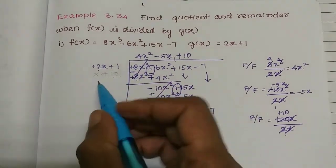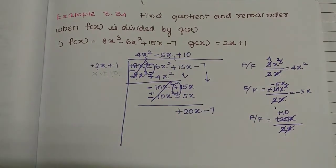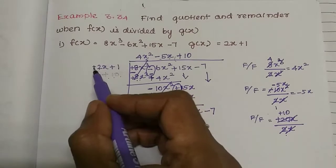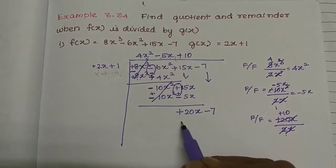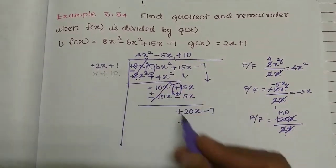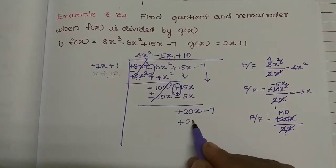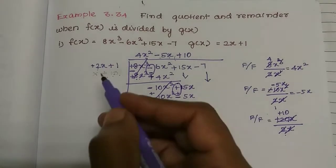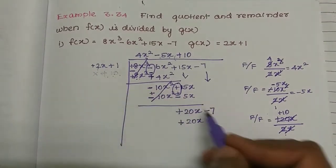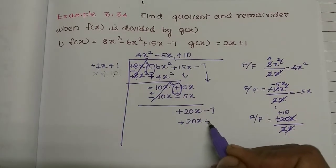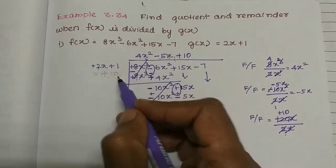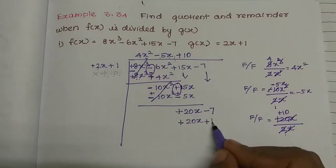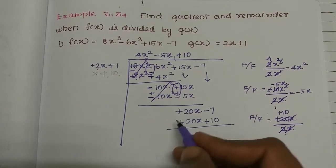We multiply plus 10 by the divisor 2x plus 1. Plus into plus is plus; 2 into 10 is 20, into x gives 20x. Then plus into plus is plus; 1 into 10 is 10.